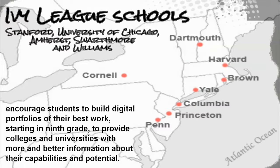In fact, Ivy League schools like Stanford, University of Chicago, Amherst, and more have been encouraging students to build digital portfolios of their best work starting in ninth grade. This provides colleges and universities with more and better information about their capabilities and potential. Our students need those grades and SAT scores, but colleges and universities are more and more looking at what is behind those numbers and what the student is actually capable of doing with the education they have.